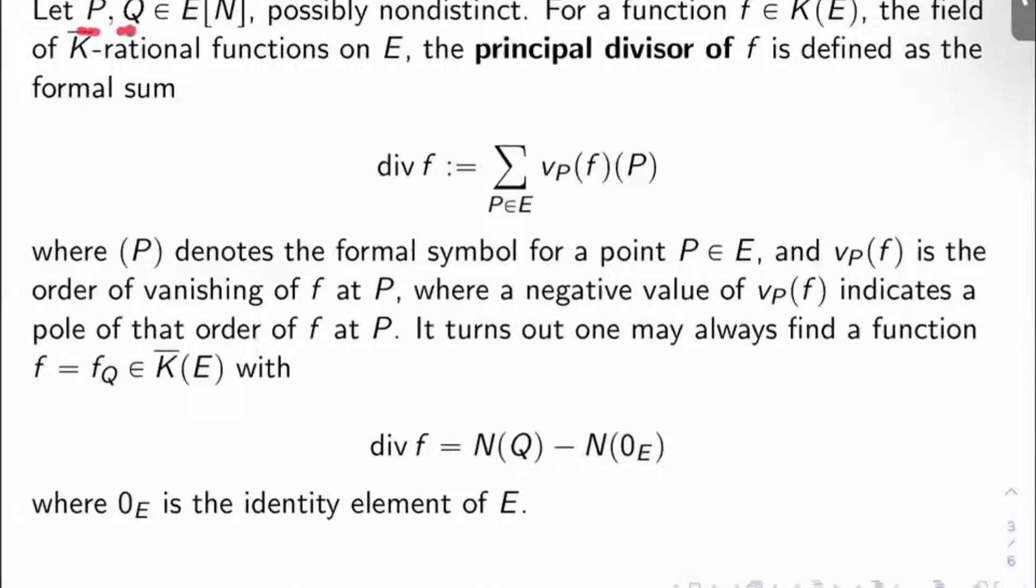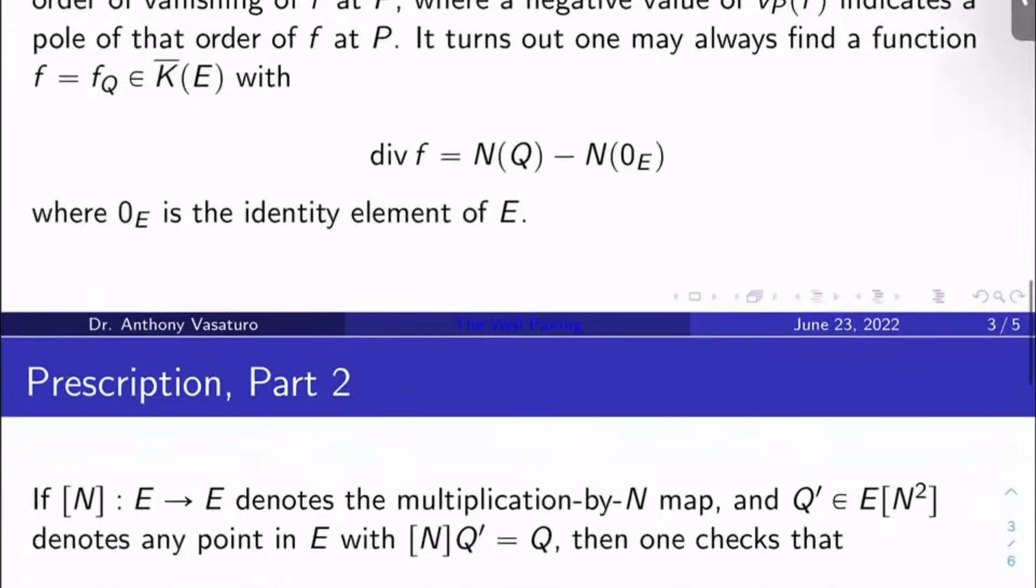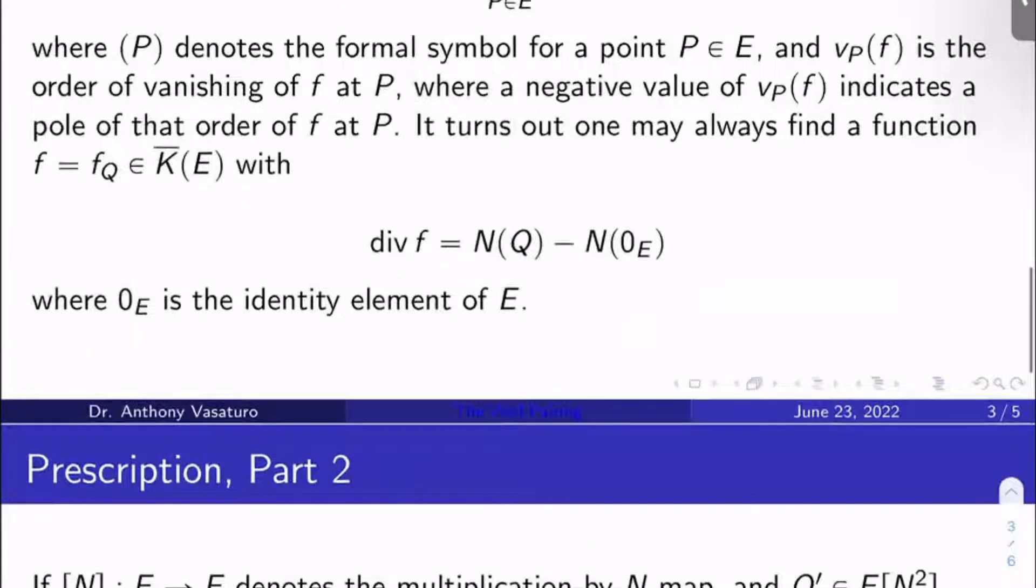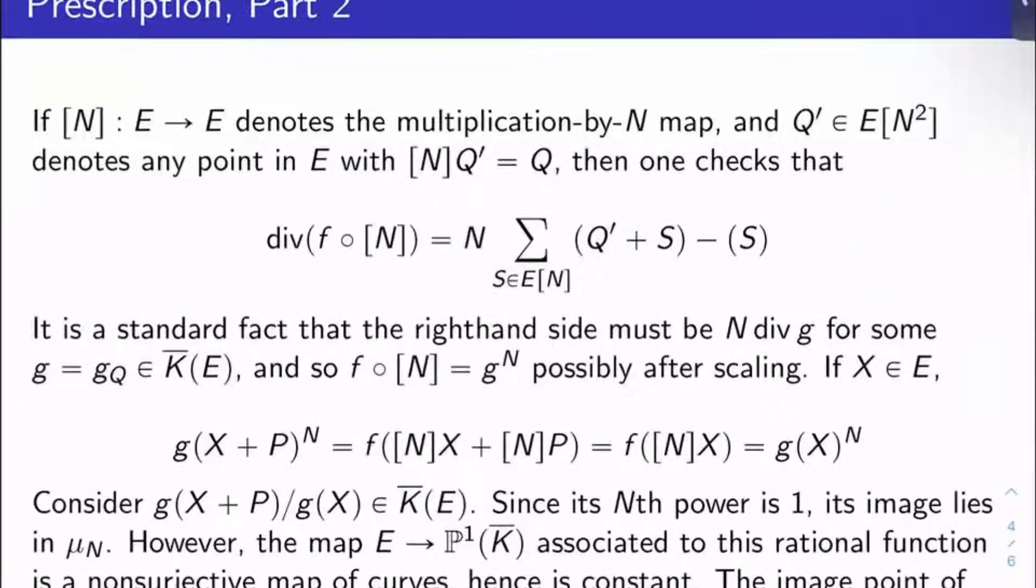So like a 2(P) would mean that f vanishes to order two at P. But a negative 2(P) would mean that f has a pole of order two at P. Now it turns out you can always find a function. So remember, I have these P in these Qs in the end torsion of E. You can always find a function f, which depends on Q, in K̄(E). So it's a K̄ rational function on E, whose divisor is just N times the formal point (Q) minus N times the formal point (0), where 0 is the identity element of E. Remember, E is an abelian group under the addition law, collinear triples sum to zero. So we can, in other words, I can always find a function in K̄(E) that vanishes to order N at Q and has a pole of order N at the neutral element of the group. So this is a standard fact in algebraic geometry. I would see like Silverman 1 for this.